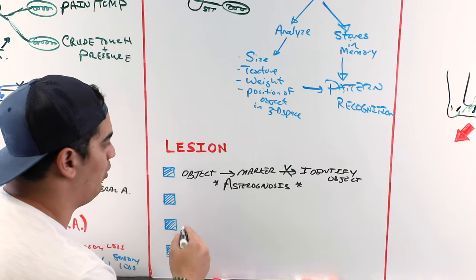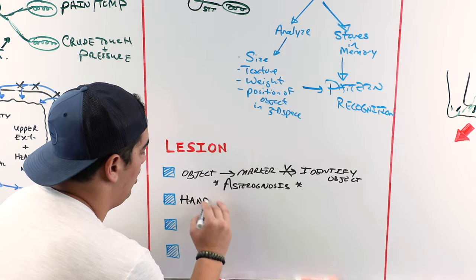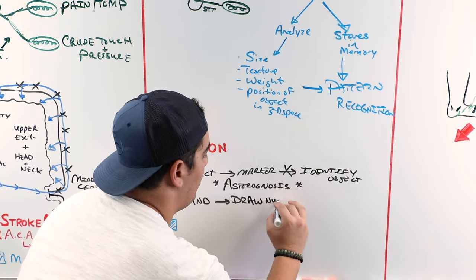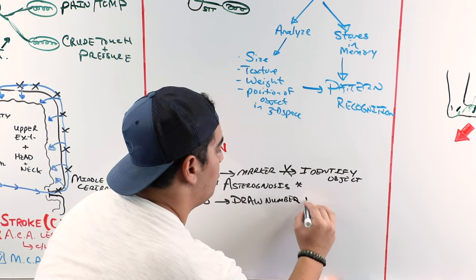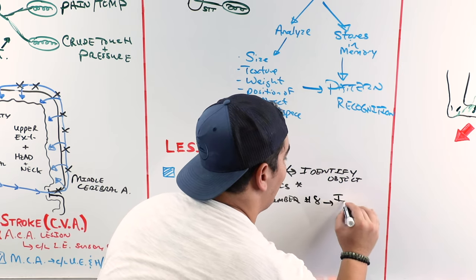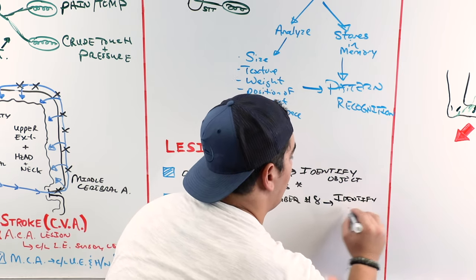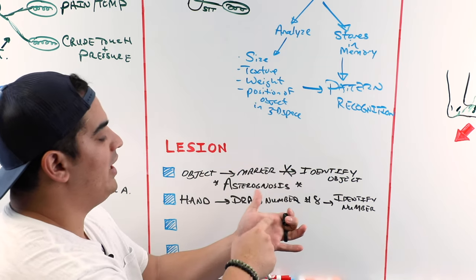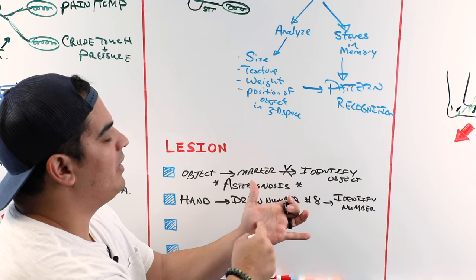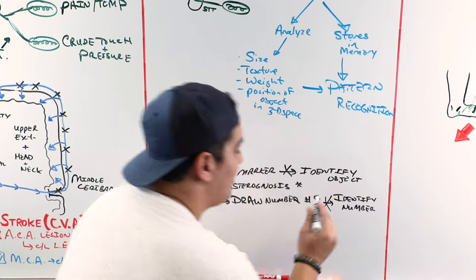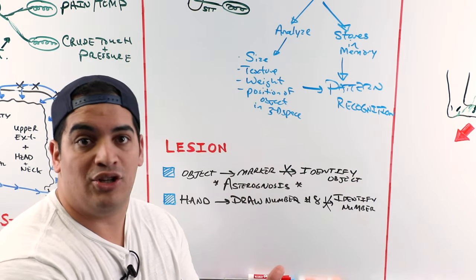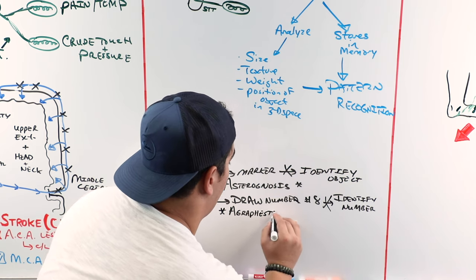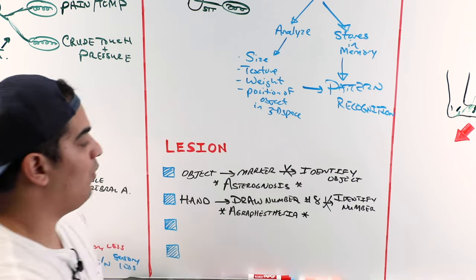Another clinical test: take a patient's hand, have them close their eyes, and draw a number on their hand with your finger — say, the number eight. Ask them to identify what number was drawn. If they can't identify the symbol, this condition is called agraphesthesia. This is another test we perform in a neurophysical exam to assess the integrity of the sensory pathway.